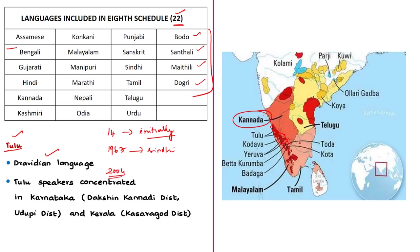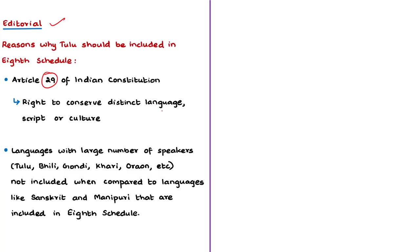The author quoted Article 29 of the Indian Constitution, which provides that a section of citizens having a distinct language, script, or culture have the right to conserve the same. Both the state and citizens have equal responsibility to conserve these. The author also tells that languages with fewer speakers like Sanskrit and Manipuri have been included in the Eighth Schedule, whereas languages with more speakers like Tulu, Bhili, Gondi, and Khasi are not included. So the author calls Tulu a textbook example of linguistic discrimination.